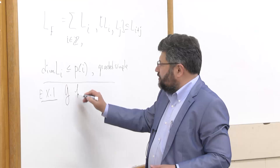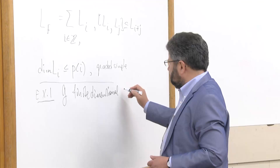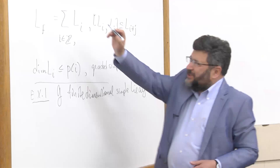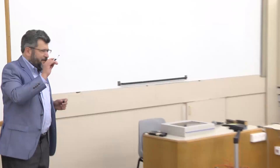Let's consider some examples. Example one: let G be a finite dimensional simple Lie algebra. Let's assume that the characteristic of the ground field is zero and that F is algebraically closed. Arnold used to say that it is very easy to recognize an algebraist — they always start lectures with the phrase: let F be an algebraically closed field of zero characteristic.